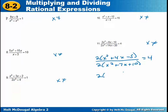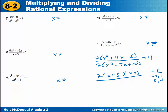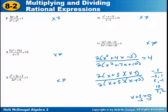Now factor the numerator: look for factors of negative 5 that equal positive 4 — that's 5 times negative 1, so we write (X plus 5)(X minus 1). Now factor the denominator — don't forget your 2. Look for factors of positive 10 that equal 7: that's 5 times 2, giving (X plus 5)(X plus 2). Now we can say what X cannot equal by setting the denominator factors equal to 0: X cannot equal negative 5, and X cannot equal negative 2. Keep that in mind as you finish solving.